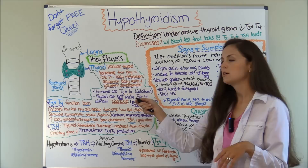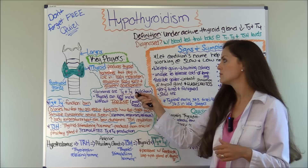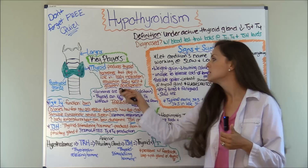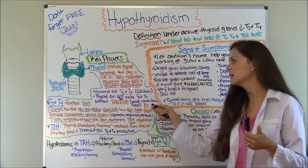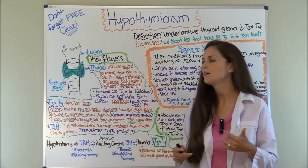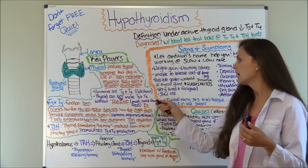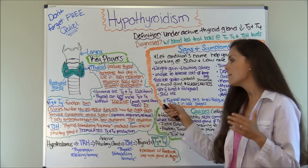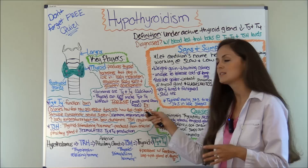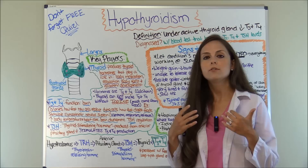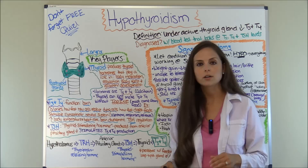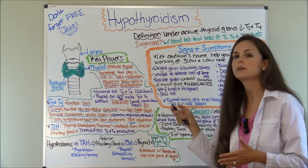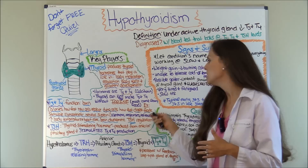What does the thyroid do? The thyroid produces thyroid hormones T3 and T4, which play a huge role in our body's metabolism, temperature regulation, and growth and development — especially in pediatric patients, who need good thyroid levels so the brain can develop properly. The thyroid also produces calcitonin, but what we're most concerned with is T3 and T4. One important thing to remember: the thyroid cannot make T3 and T4 without iodine. You get iodine from food. If you're not getting enough iodine, you can struggle with hypothyroidism; too much iodine can lead to hyperthyroidism.